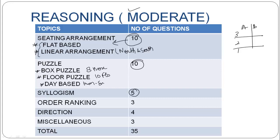There were 5 easy questions from syllogism. Order and ranking contained 3 questions. Direction questions were 4. Miscellaneous 3 questions. And total, there were 35 questions.